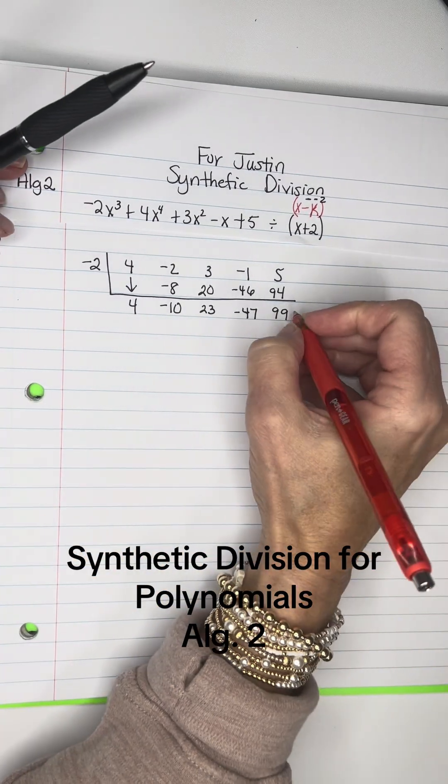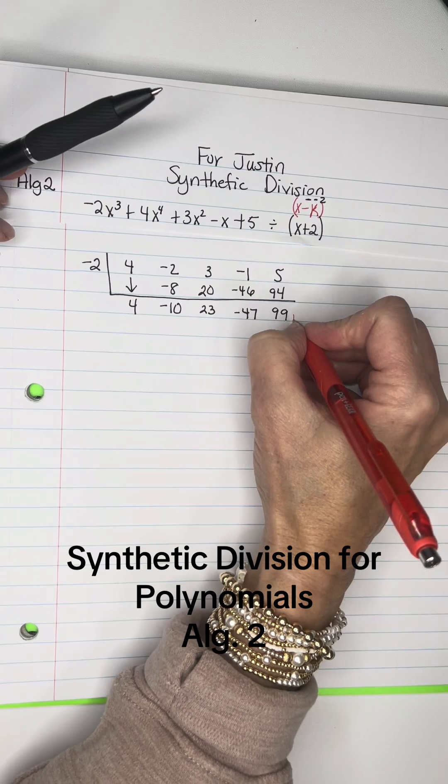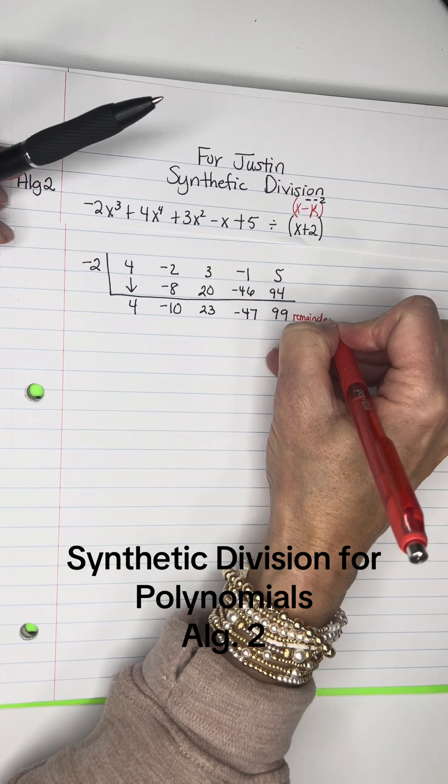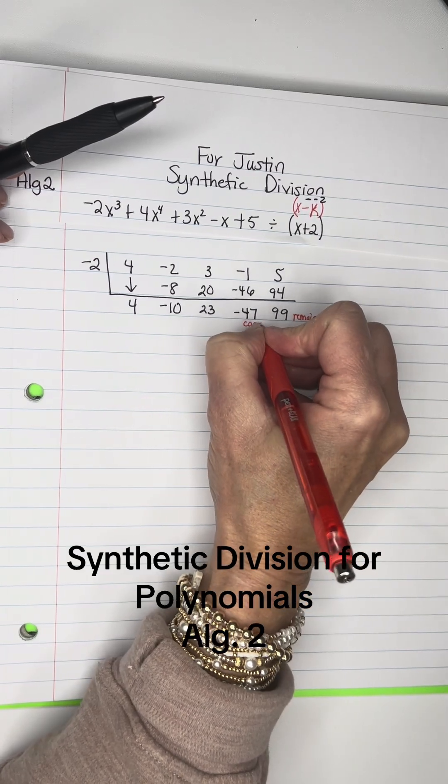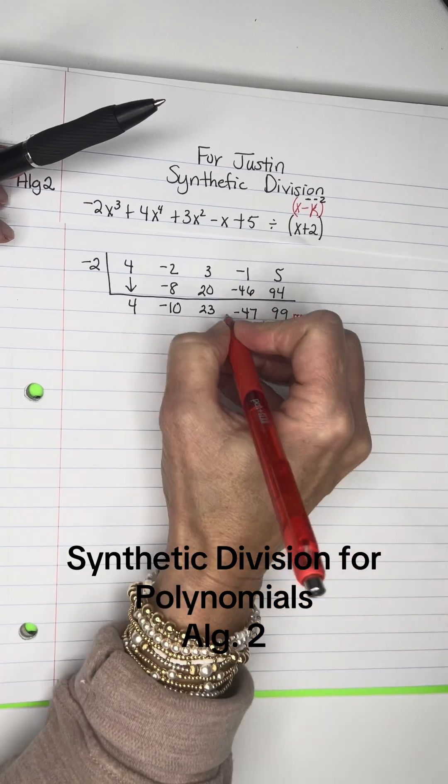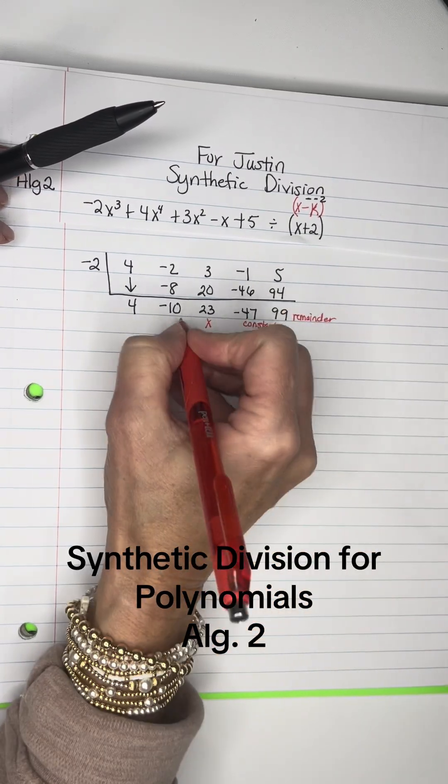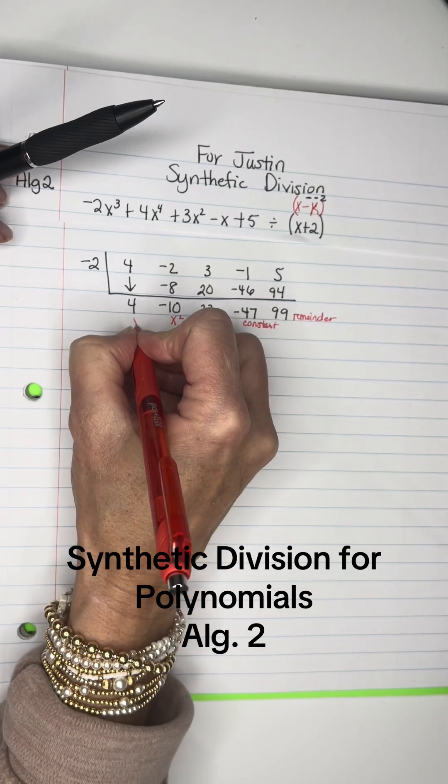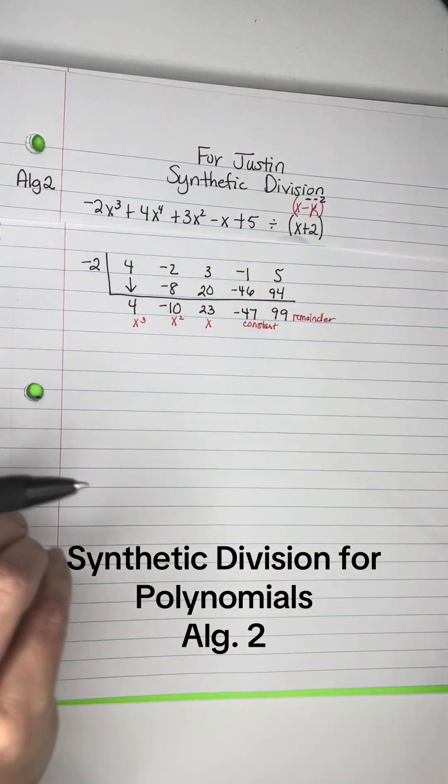So, this would be your remainder. This number is your constant. This will be your X to the first power, your X squared, and your X cubed.